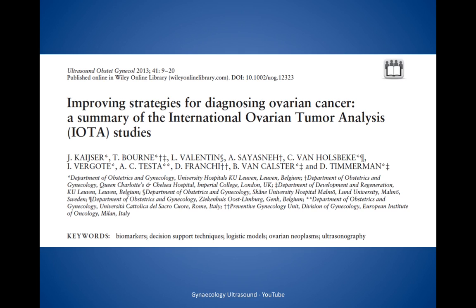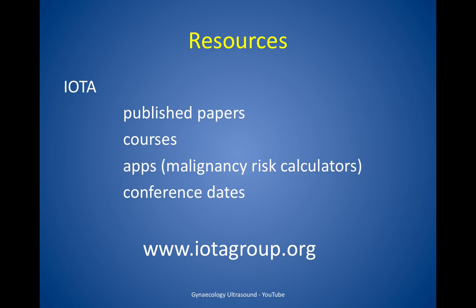Then use the IOTA criteria to describe the lesion, apply simple descriptors and pattern recognition, apply simple rules — there are also other models that will be discussed later — and write a clear report stating whether it looks benign, uncertain or malignant, and suggest histology, then chase the histology to see whether you were right. A 2013 paper describes all the different strategies for diagnosing ovarian cancer. Other resources from IOTA include extensive publications, courses, malignancy risk calculator apps, and dates of yearly conferences on their website.